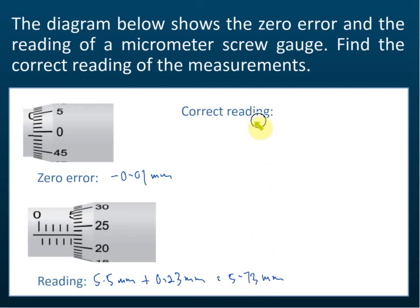But this is not yet the correct reading because we must minus the zero error. The zero error is 5.73 minus negative 0.01, so it equals 5.74 mm. So that is how we take the readings from a micrometer screw gauge.